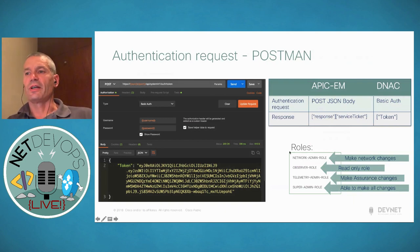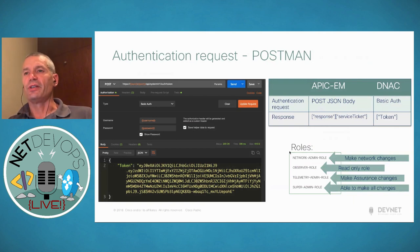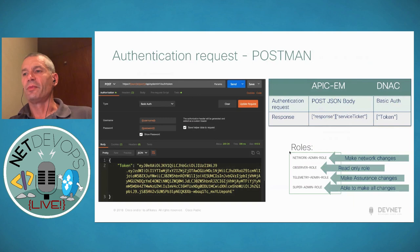On authentication, one of the other questions that comes up is whether there is role-based access. The answer is yes. There are four roles available today: the network admin role, which allows you to make any changes to the network components; an observer role that is read-only; a telemetry admin role; and a super admin role that allows all changes.